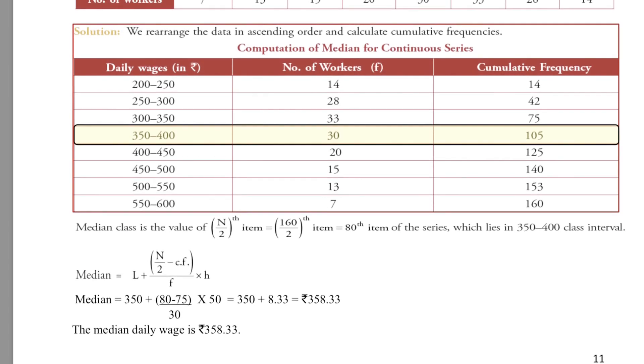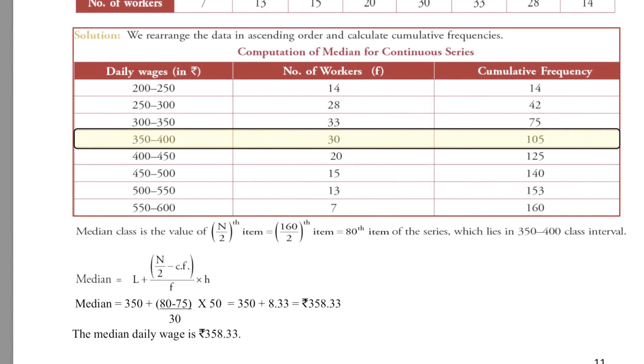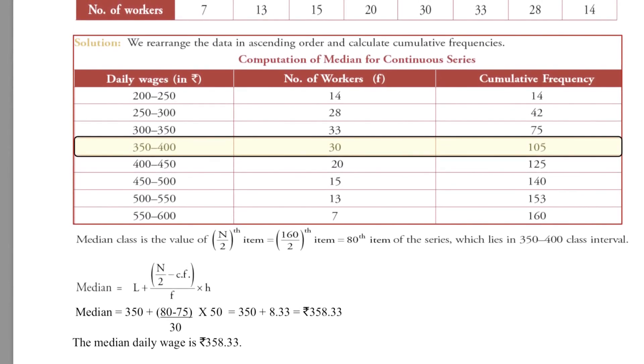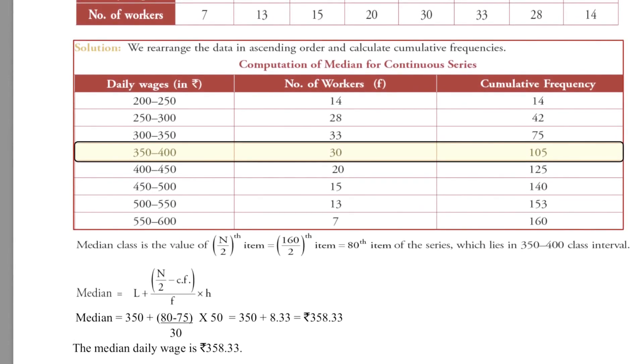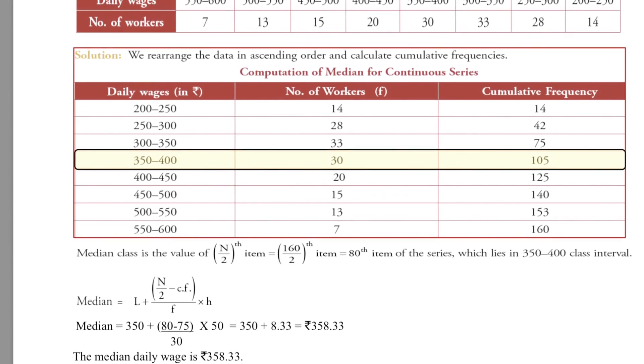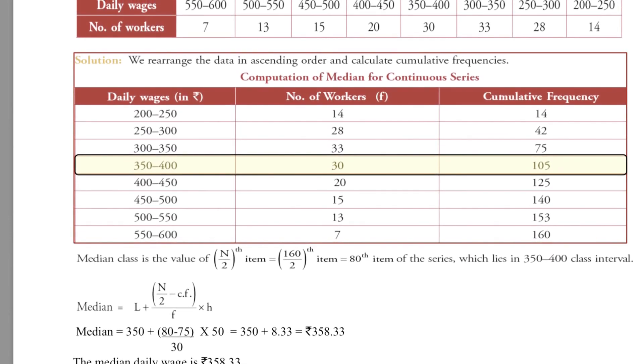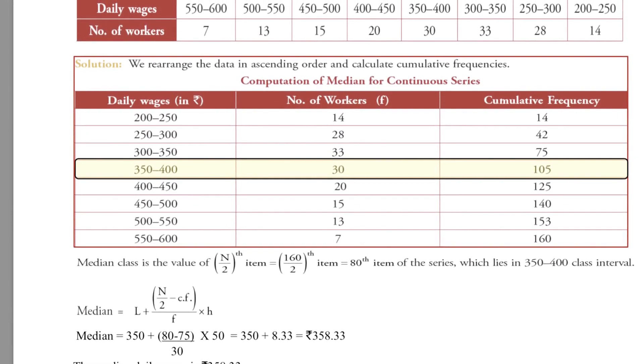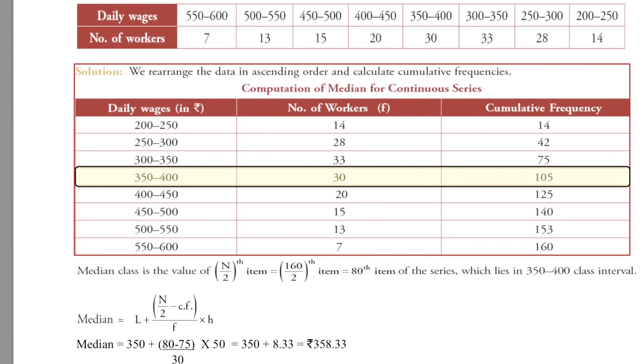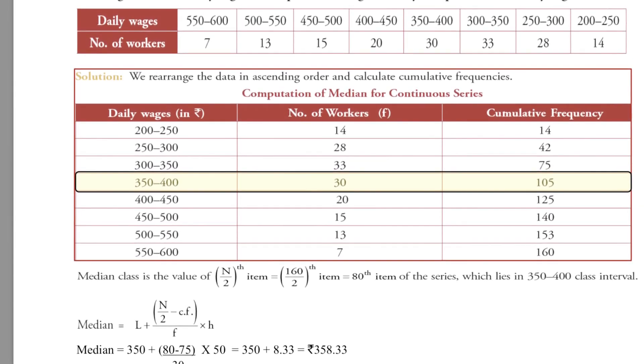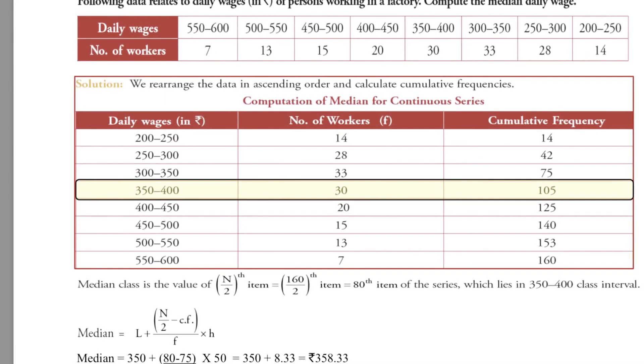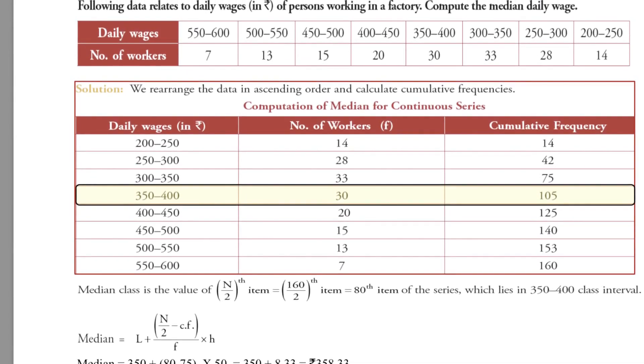In continuous series, we arrange the data in ascending order and calculate cumulative frequency. The median class is the value of n upon 2th item. Here it is 160 upon 2 item, that is 80th item of the series, which lies in the group of 350 to 400 class interval. So, we apply the formula, median is equal to L plus n upon 2 minus cf upon f into height.